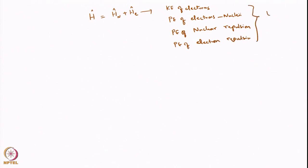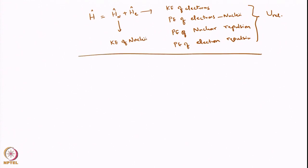All these terms together are called U_relative. The H_nuclear consists of the kinetic energy of the nuclei. The H_internal, which is the motion of the nuclei, can be written as H_N plus U_relative.